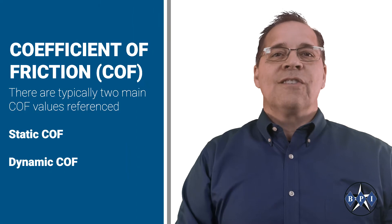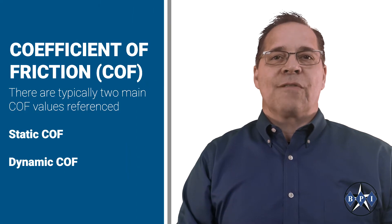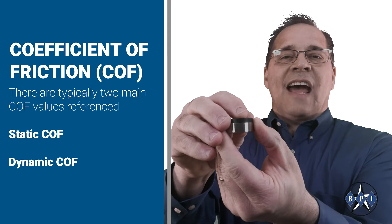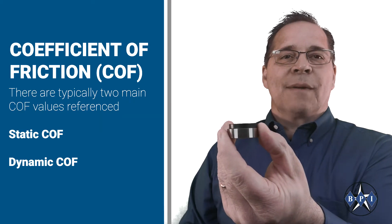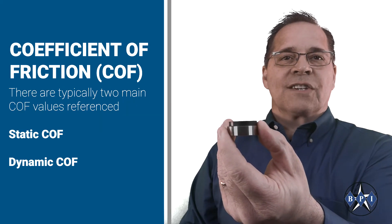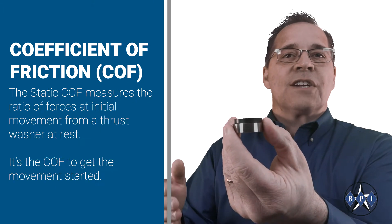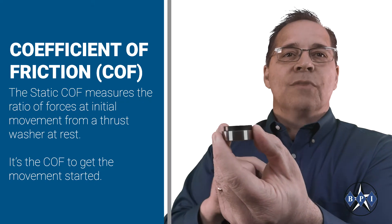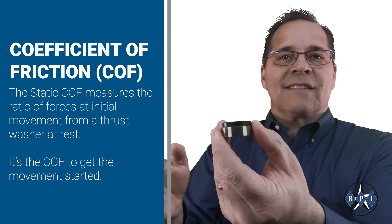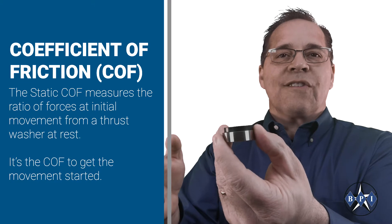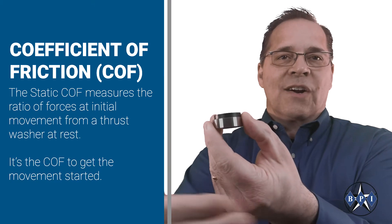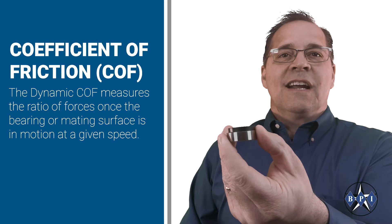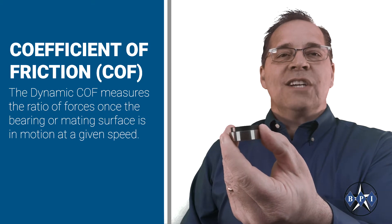There are typically two main coefficient of friction values: static coefficient of friction and dynamic coefficient of friction. The static coefficient of friction measures the ratio of the forces at initial movement from a thrust washer at rest — it's the coefficient of friction to get the movement started.